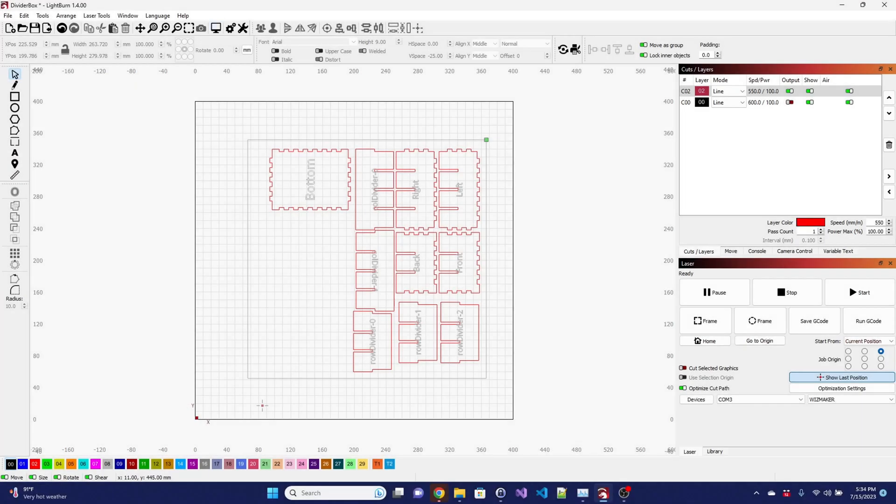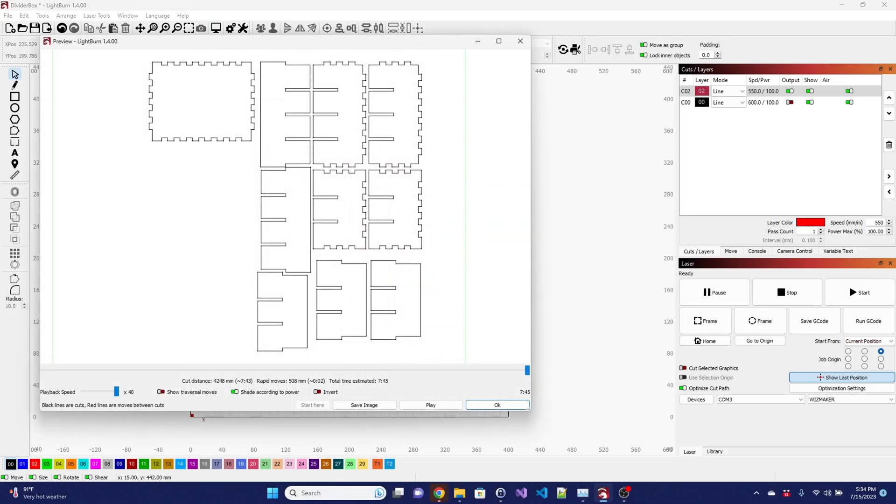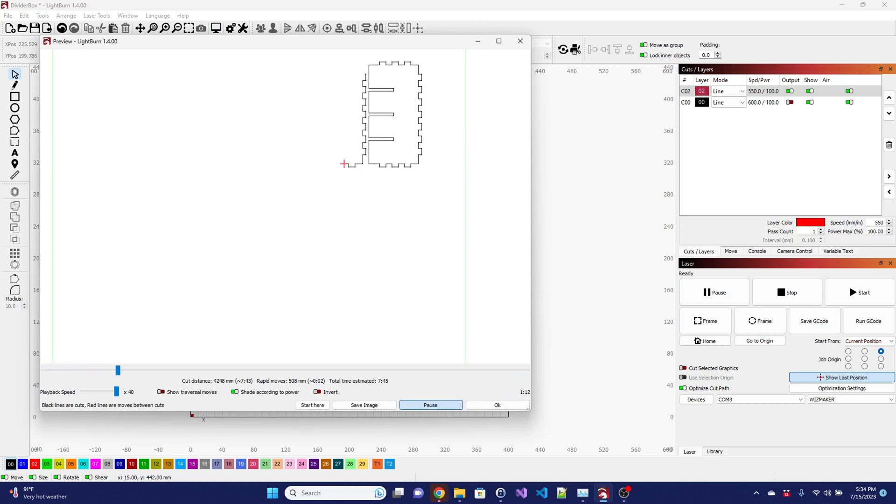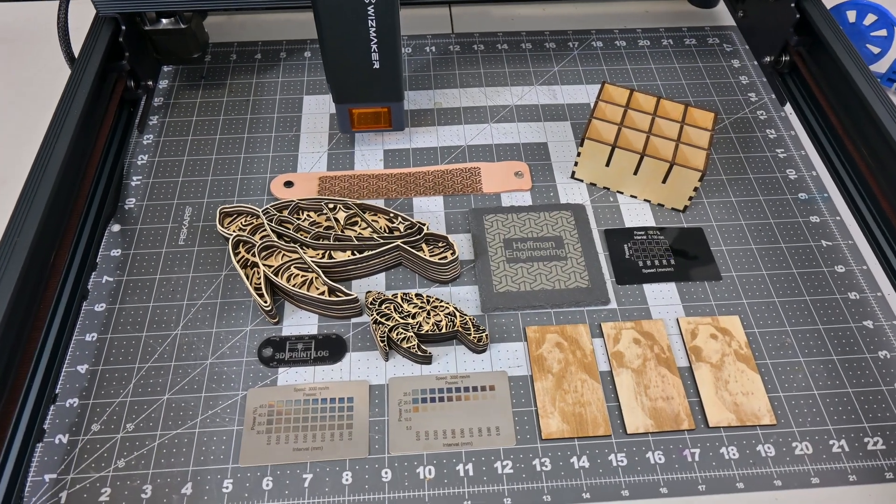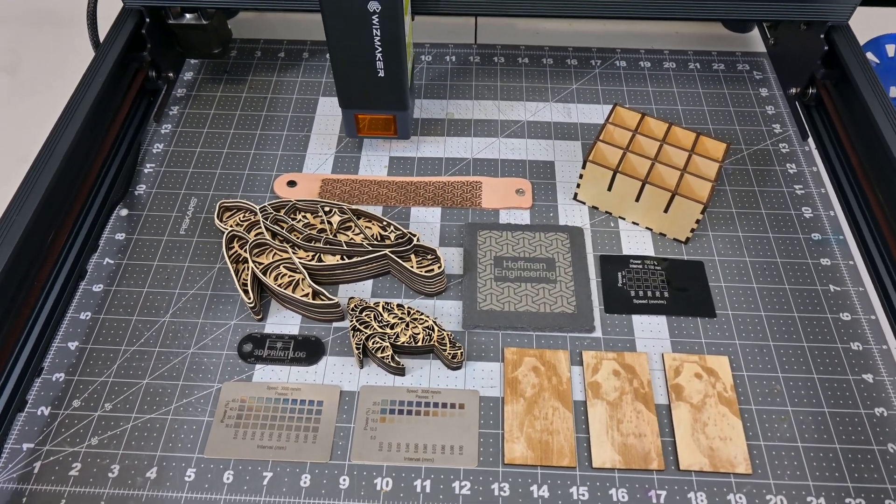The WizMaker L1 can be controlled using any GRBL control software, such as LaserGRBL or LightBurn. LaserGRBL is free, but I am a big fan of LightBurn so that is what I use for all my tests. WizMaker provides a LightBurn config file for the L1 on the included micro SD card. So enough of the specs, how well does the WizMaker L1 actually cut and engrave?